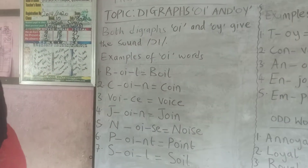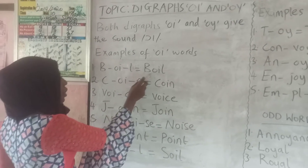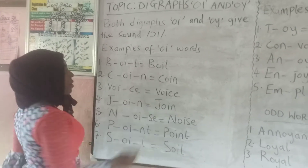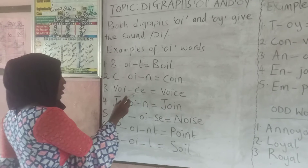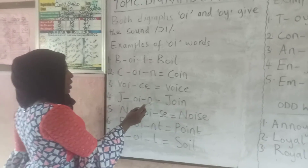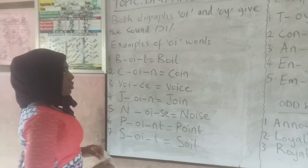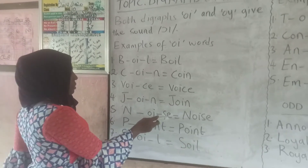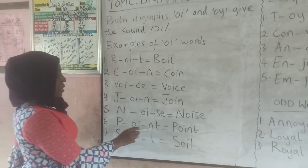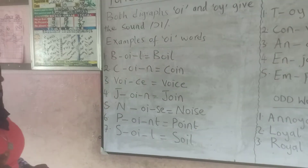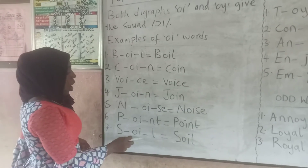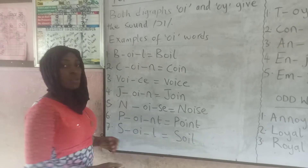Let's pronounce one more time and spell these words. N-O-I-S-E: noise. P-O-I-N-T: point. S-O-I-L: soil.